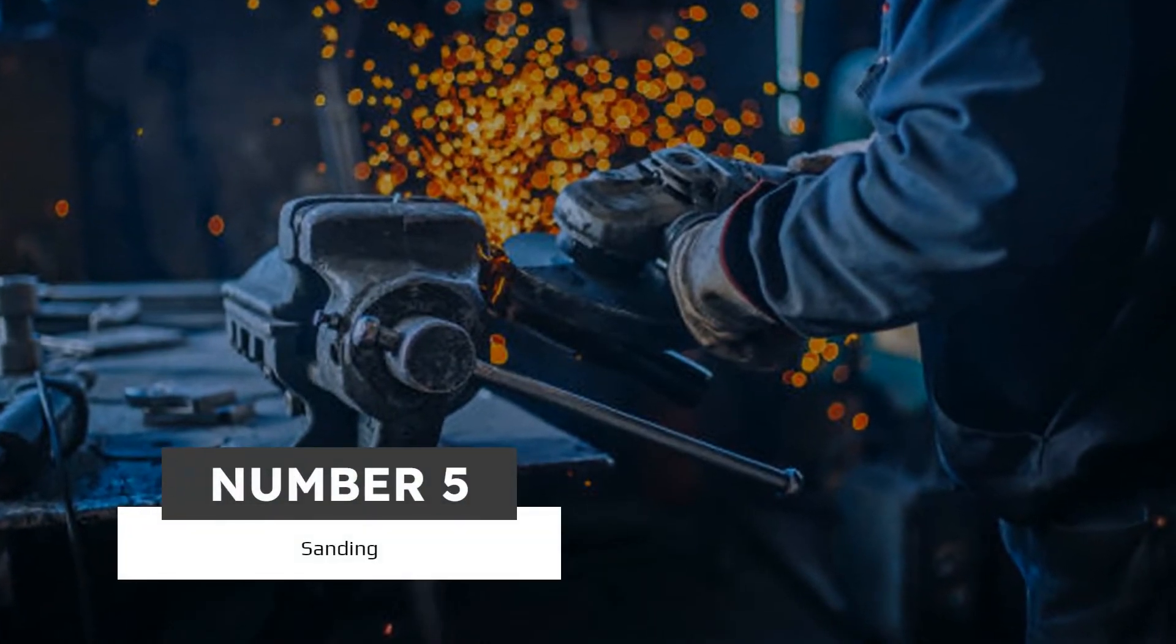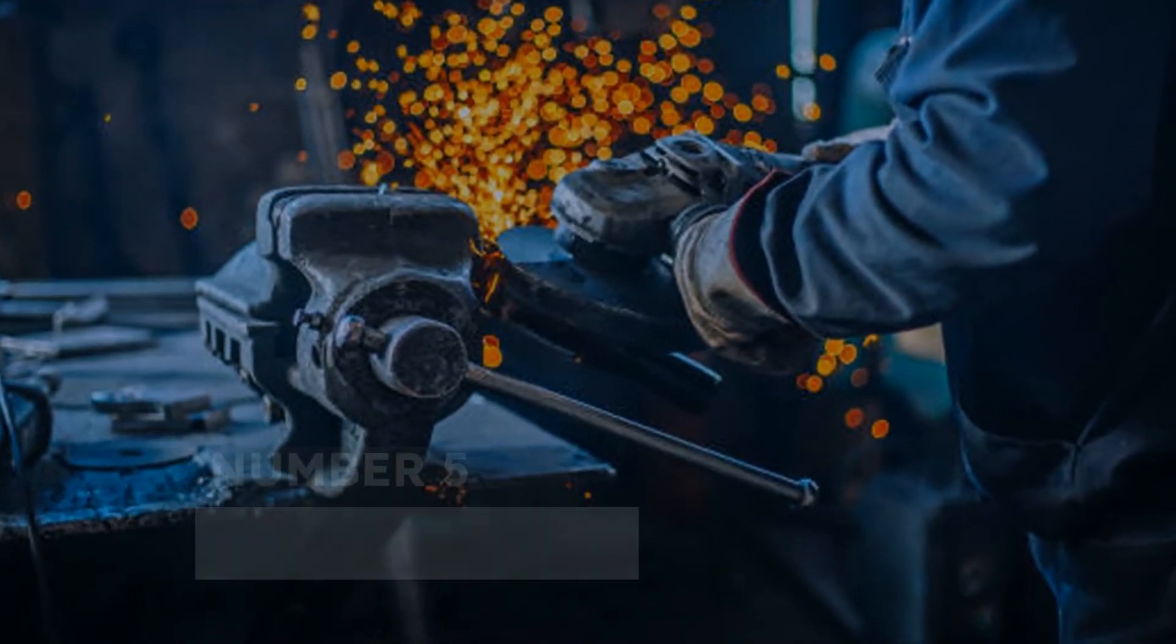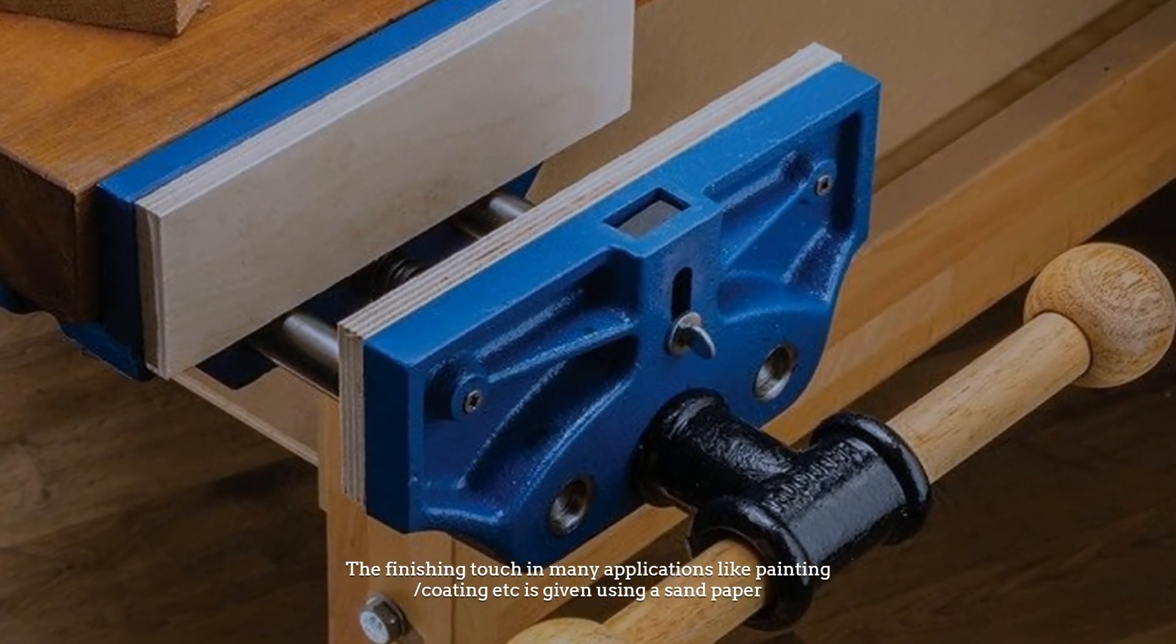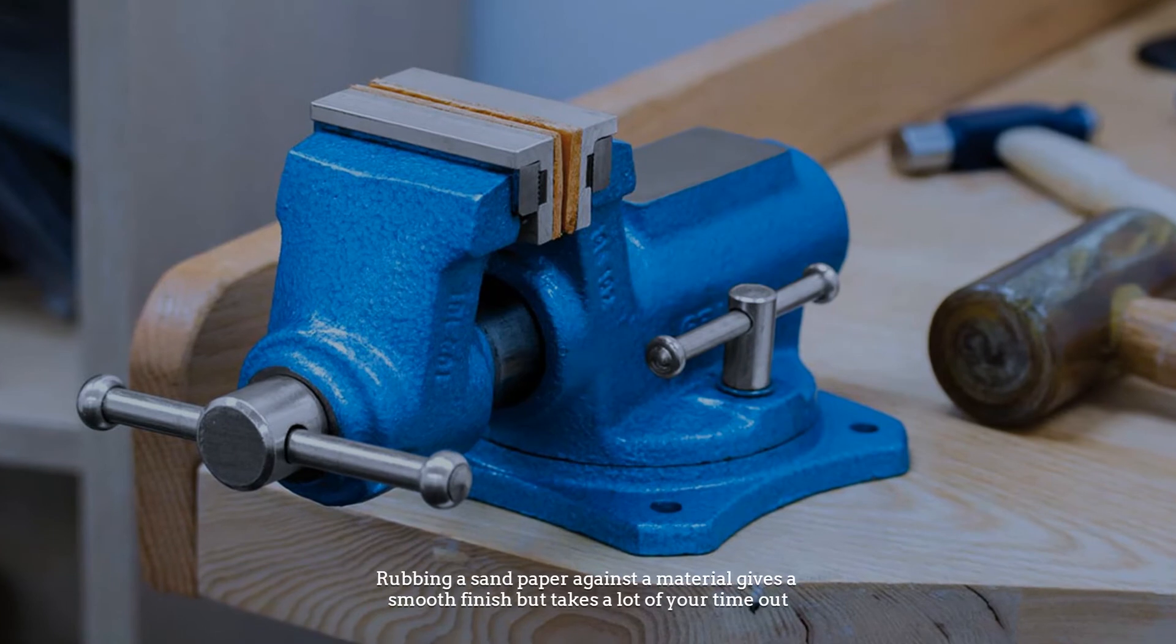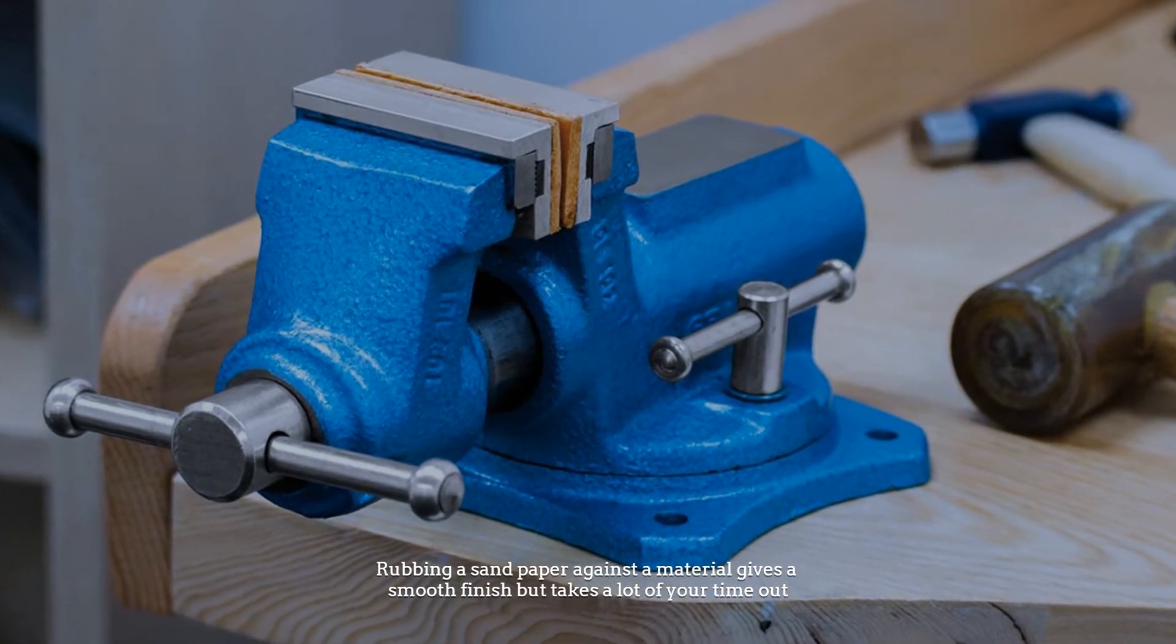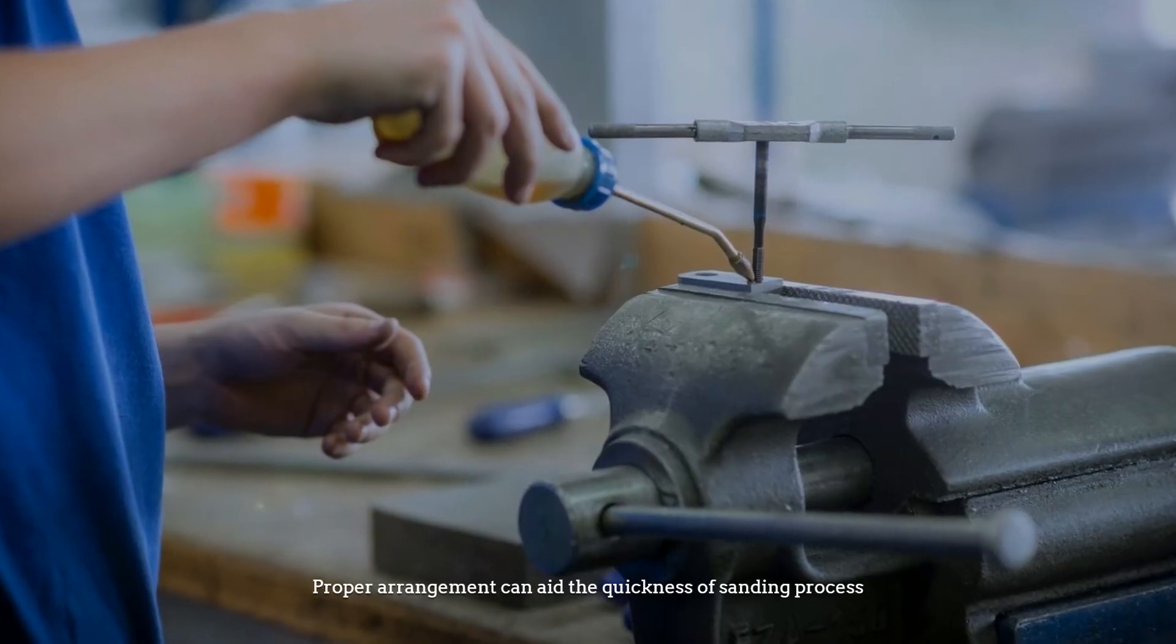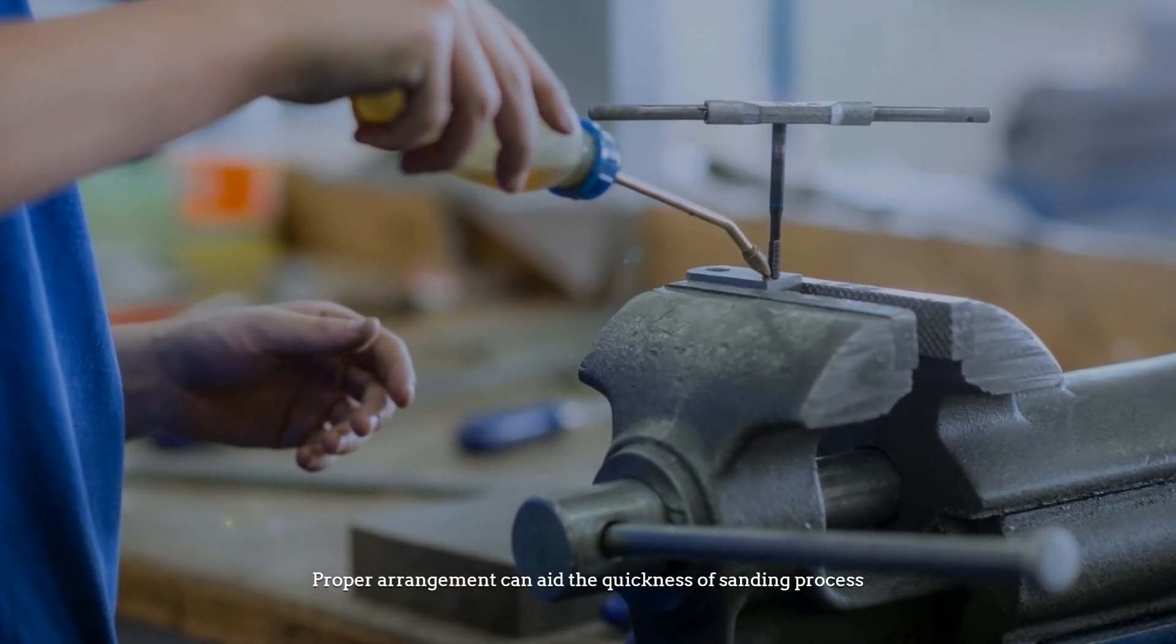Number 5. Sanding. The finishing touch in many applications like painting, coating etc. is given using a sandpaper. Rubbing a sandpaper against a material gives a smooth finish but takes a lot of your time out. Proper arrangement can aid the quickness of sanding process.